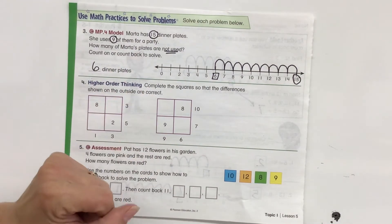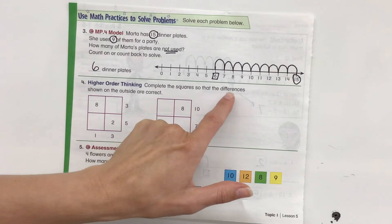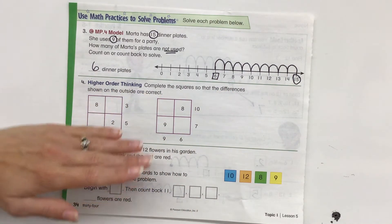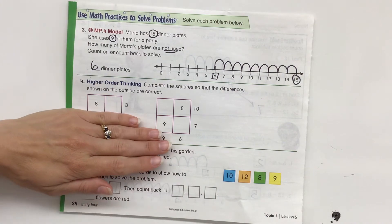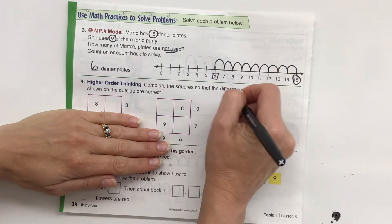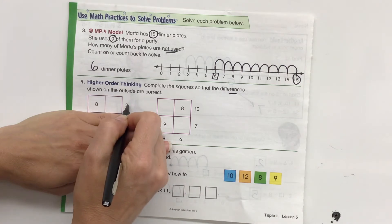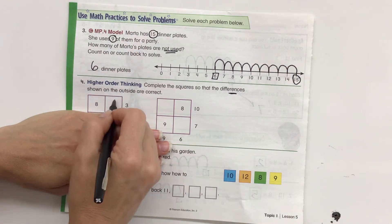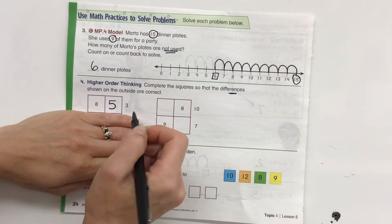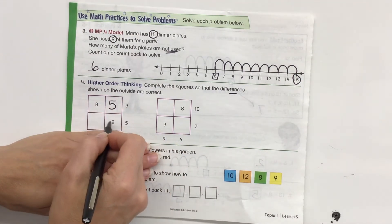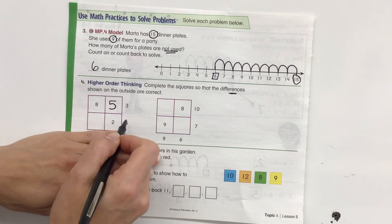This is our higher order thinking. Complete the squares so the differences shown on the outside are correct. So we're going to be doing differences, which means we are subtracting. 8 minus what equals 3? I know 8 minus 5 equals 3. Now let's take a look at this. Something minus 2 equals 5.